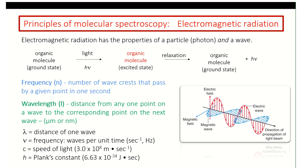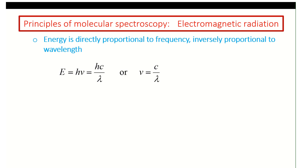Associated with that wave is, of course, the wavelength, and associated with that same species of light is the frequency, as stated before, and Planck's constant — 6.63 × 10⁻³⁴ joule-seconds.